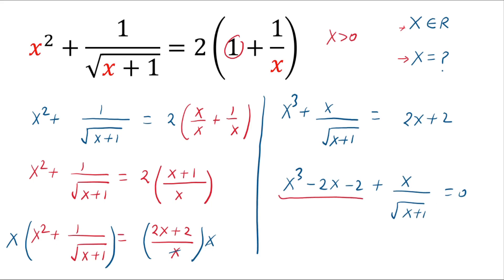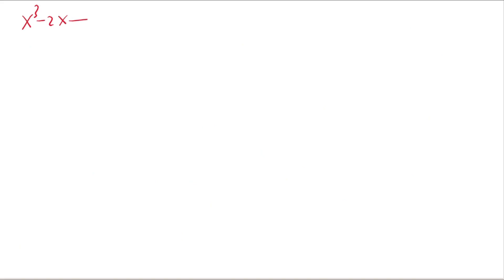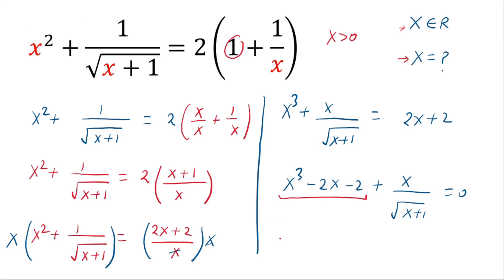Now look carefully at these three terms. We know that x cubed minus 2x minus 1 is factorizable. So this expression x cubed minus 2x minus 1 can be rewritten, separating into x cubed minus 2x and minus 1, plus x over square root of x plus 1, all equaling 0.